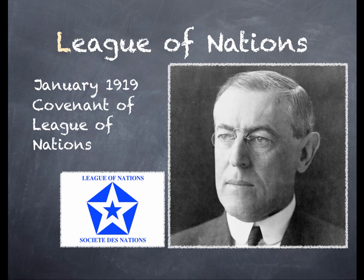First, L - League of Nations. This was the first thing set up by the treaty makers at the Versailles Conference. In January of 1919, the Covenant, which was the rule book of the League of Nations, was set up. The League of Nations effectively came into being in the Treaty of Versailles. That was the brainchild of President Woodrow Wilson of the United States.